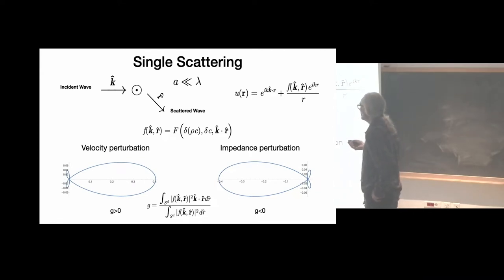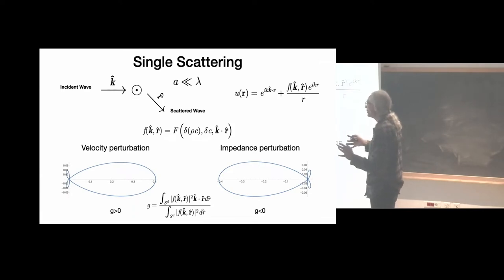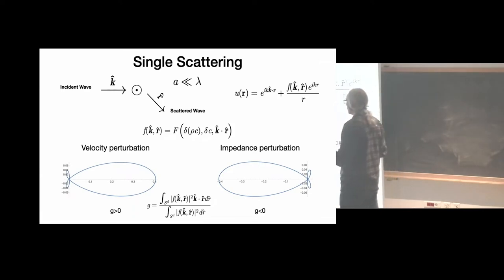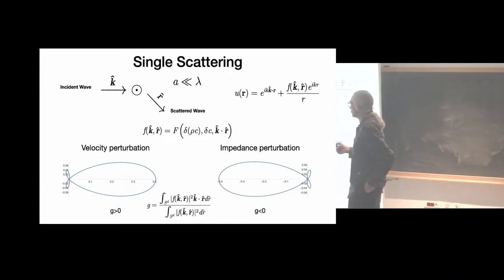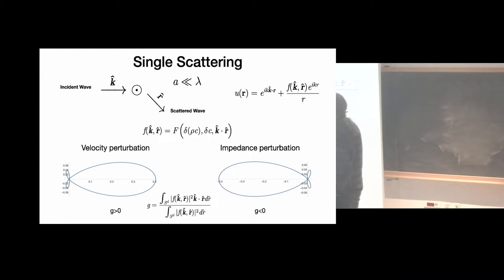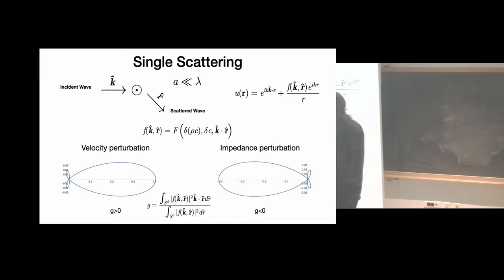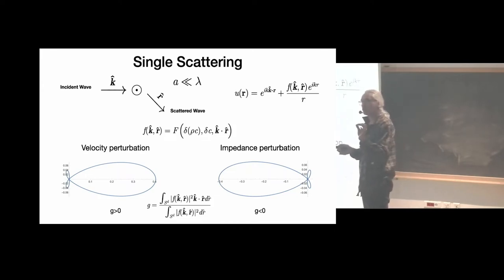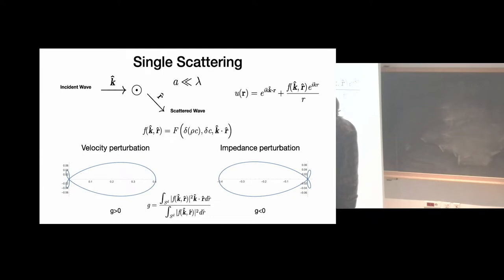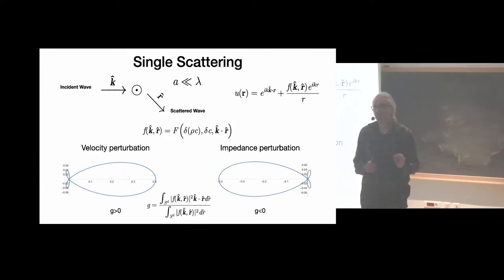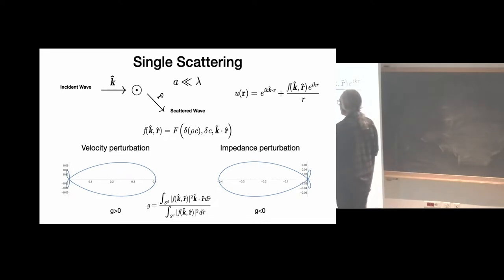As pointed out by Aki a long time ago, this decomposition is valid only for objects with small perturbations with respect to the background medium. There are two end-member types of perturbations: velocity perturbations and impedance perturbations. Impedance is defined as the product of density ρ and wave speed. These two types of perturbations give completely different scattering patterns.